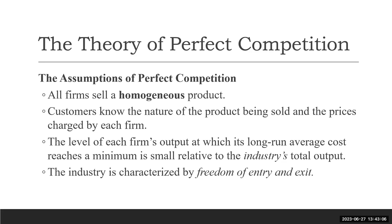The second condition is perfect information — customers know the nature of the product being sold and the price charged by each firm. Third, each firm's output at which its long-run average total cost is minimized must be small relative to the industry's total output. Some businesses require very large output to reach minimum average cost, capturing a large market share — making a competitive market structure impossible for those products.